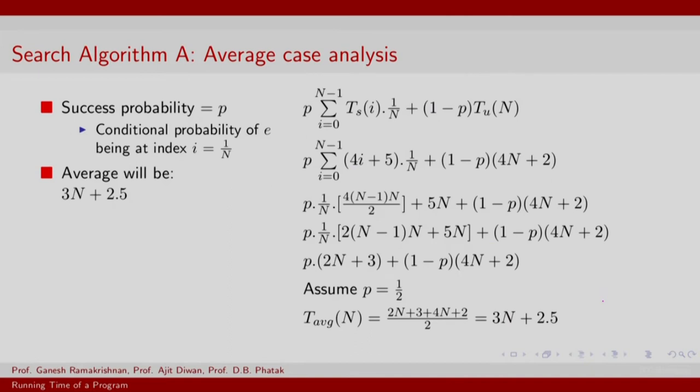So let us take the average case for search algorithm A. We will assume that the probability of success is say P, and given that there is success, the conditional probability of element E being at index i is 1 by n, and this basically is for all i. So what exactly is the probability? Well, we can first of all assume some success probability, let us say P is half. What the specific value of P is will also depend on how likely your element E is given the kind of sequences that get generated, but P equals half is a reasonable assumption.